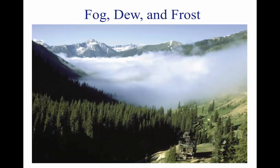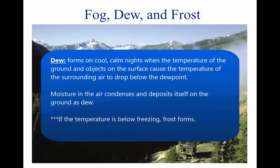On cool, calm nights, the temperature of the ground and objects on the surface can cause temperatures of the surrounding air to drop below the dew point. When this occurs, the moisture in the air condenses and deposits itself on the ground, buildings, and other objects like cars and aircraft. This moisture is known as dew and sometimes can be seen on grass in the morning. If the temperature is below freezing, the moisture is deposited in the form of frost.